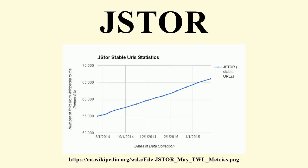JSTOR Plant Science is available in addition to the main site. JSTOR Plant Science provides access to content such as plant-type specimens, taxonomic structures, scientific literature, and related materials aimed at those researching, teaching or studying botany, biology, ecology, environmental, and conservation studies. The materials on JSTOR Plant Science are contributed through the Global Plants Initiative and are accessible only to JSTOR and GPI members.